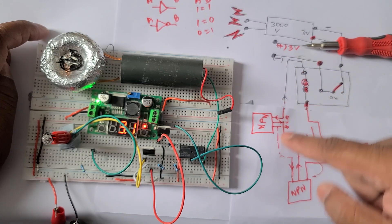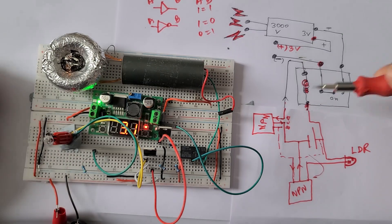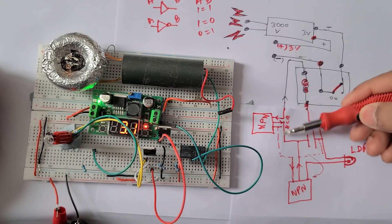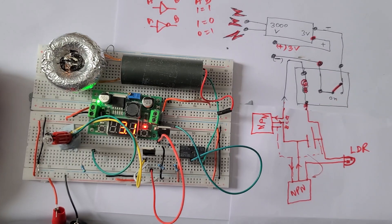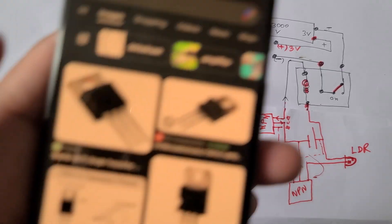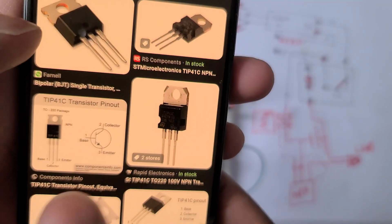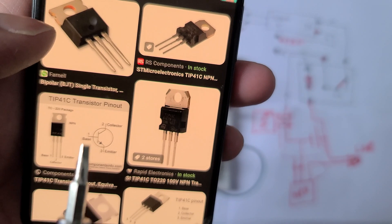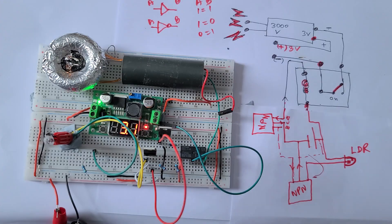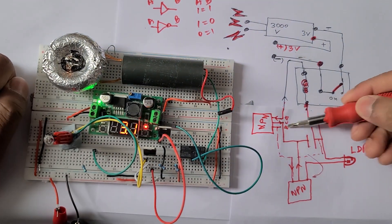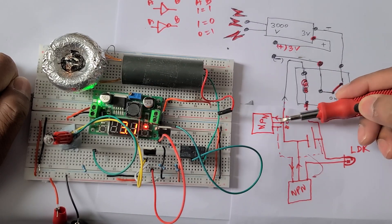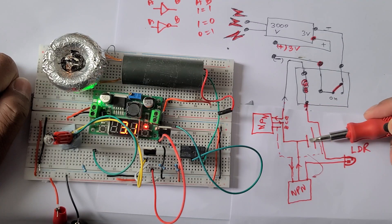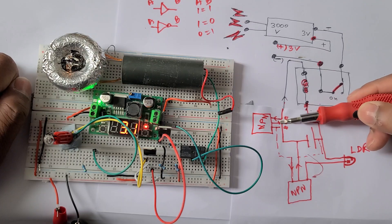The TIP41C MOSFET has three pins: base, emitter, and collector. So emitter is the third pin, this third pin emitter is connected to the ground, and collector is connected to the ground, but this will only be completed if there is plus 3 volt injected.